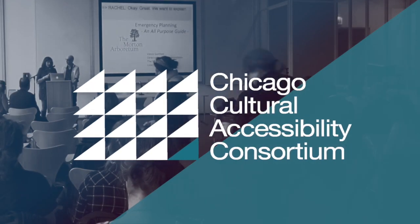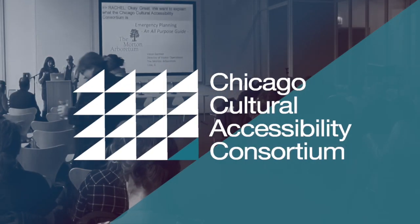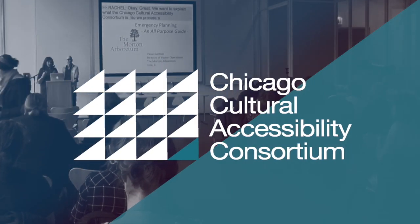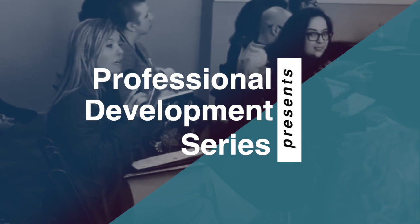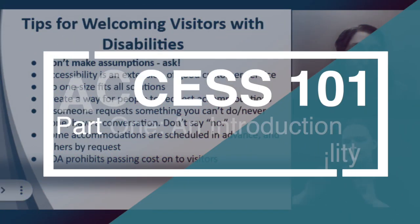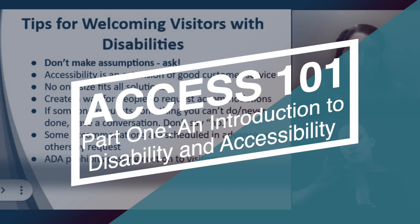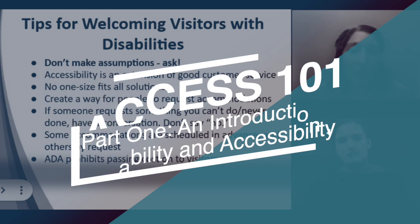Chicago Cultural Accessibility Consortium Professional Development Series presents Access 101, Part 1: An Introduction to Disability and Accessibility. The presentation slides are shown at left, with a mini video of the presenting speaker at top right, and an ASL interpreter below.